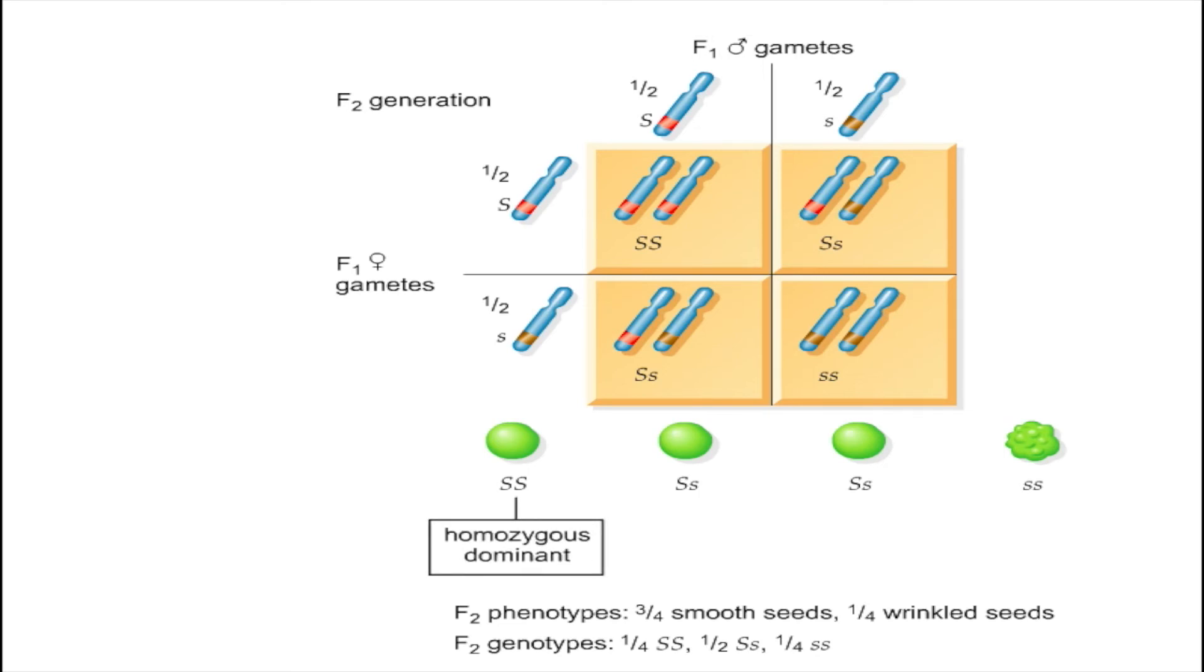The big S, big S genotype is said to be homozygous dominant. The big S, little s genotype is heterozygous, and the little s, little s genotype is homozygous recessive.